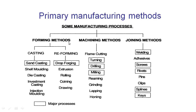Firstly we have the forming methods, and within these forming methods we have both casting and reforming. Casting is a process where we take something that is liquid — sometimes a metal, sometimes a plastic — and then we pour it into a mould, let it set so that it hardens, and then we take out the part, which we can then do further processing and machining on to bring up to the final desired standard. Sand casting is one of the most common forms of that casting process. There's also things like shell moulding, die casting, investment casting, and quite commonly with plastics, injection moulding.